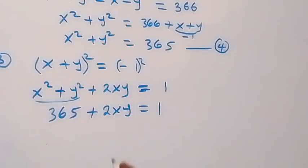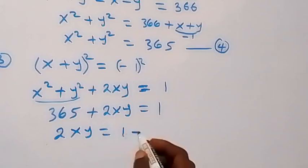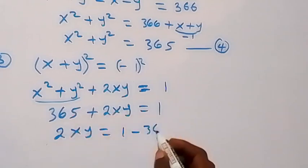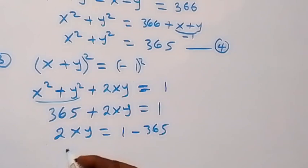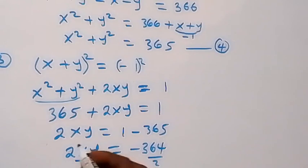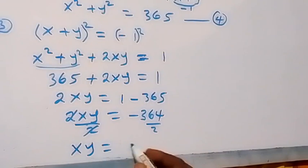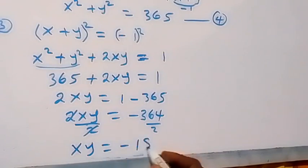From here, we now have 2xy equals to 1 minus 365, and we have 2xy equals to minus 364. Dividing both sides by 2, xy equals to minus 182.